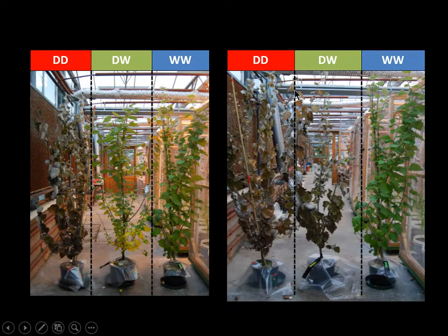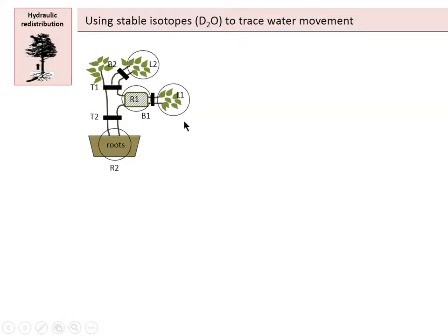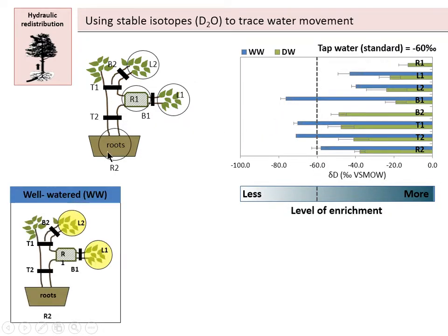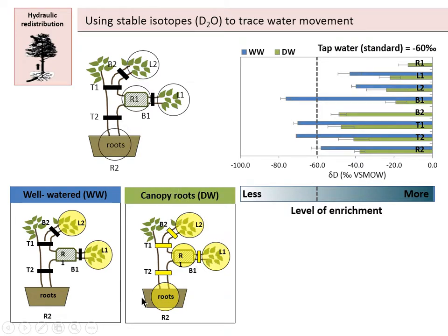These were the trees at the end of the experiment. The completely dry plants show severe stress, while the plants with canopy soil roots look better than the completely dry plants, and the well-watered plants look best. Canopy roots are beneficial for the trees and are alleviating drought stress conditions, though it didn't happen for all trees — some DW plants were almost dead, so canopy roots are not helping for some trees. We also used heavy water to trace water movement, adding it to the canopy soil and collecting samples from different parts of the tree — the same branch, neighbor branches, and underground roots. The results showed that most parts of the plants with canopy roots had heavy water, including the underground roots.